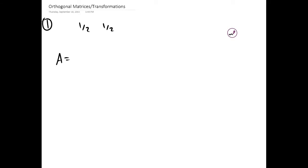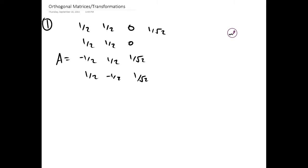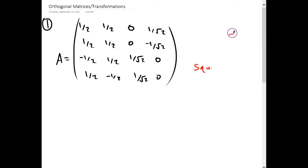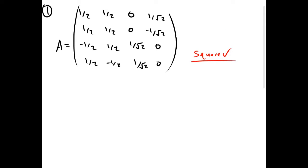We need to determine whether this matrix A is orthogonal, and if it is, we're going to find its inverse. So I'm going to write out the matrix. Here's our 4x4 matrix, and it satisfies the first criteria: it is a square matrix. We're going to define the columns as v1, v2, v3, and v4 so we can easily refer to them.